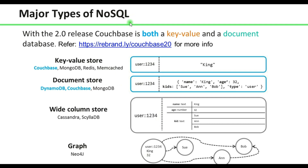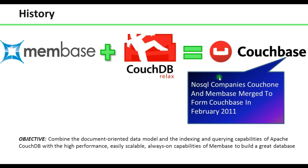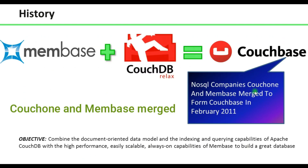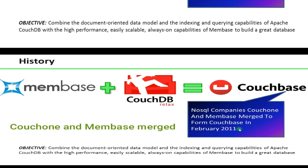The major types of NoSQL databases include: key-value store (Couchbase, MongoDB, Redis, Memcached); Couchbase is both a key-value and document database from version 2.0 onwards. Document store includes DynamoDB, Couchbase, and MongoDB. Cassandra and ScyllaDB come under column store, and Neo4j is a graph database. In terms of NoSQL company history, CouchDB and Membase merged to form Couchbase in 2011.